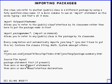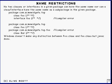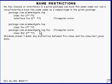A compilation unit source file is laid out with the package statement first, followed by import statements, and then classes and interfaces. Names must be unique for classes and interfaces, and you can't have a situation where a fully qualified class name and a package name can be confused.